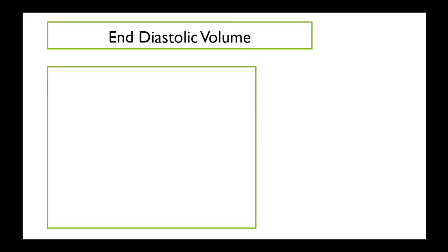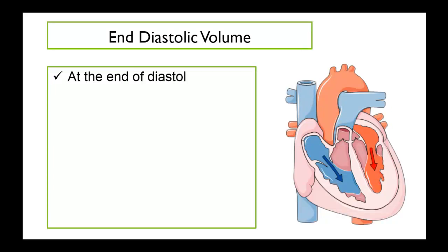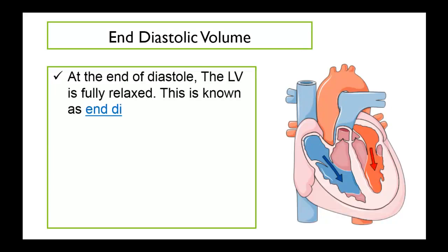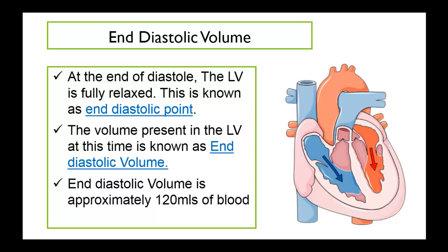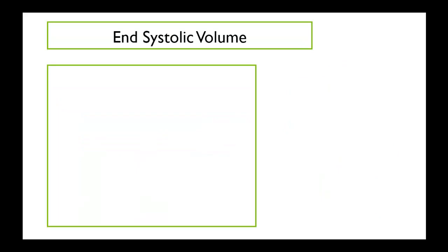Let's start by knowing what end-diastolic volume is. At the end of diastole, the left ventricle is fully relaxed, and this is known as the end-diastolic point. The volume present in the left ventricle at this time is known as end-diastolic volume, which is approximately 120 milliliters of blood in a normal adult human being.